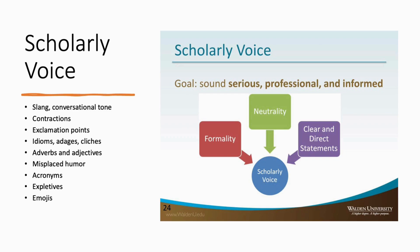In academia, we want to be less extreme and more moderate. Rather than saying an article was great or terrible, say it was effective, or note a specific challenge — because there are different perspectives and different ranges. We want a neutral, moderate tone as we write. Generalized vocabulary like things and stuff can come across as not specific enough and not really academic.